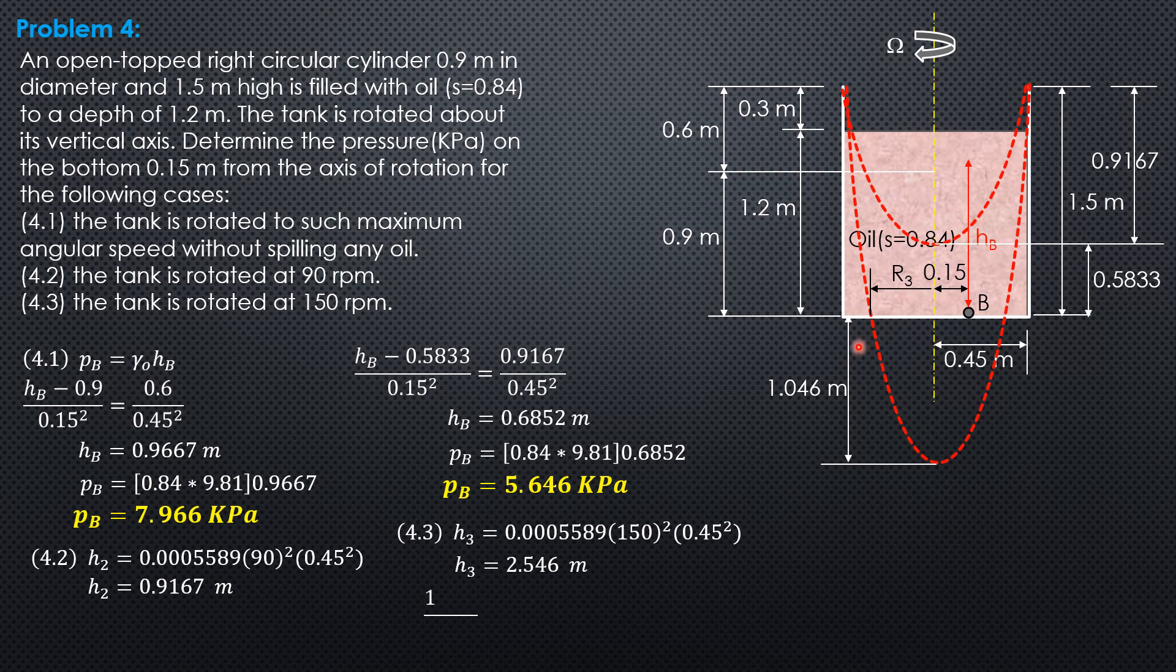To solve for R3 by squared property of parabola, 1.046 over R3 squared equals 2.546 total height over 0.45 squared. So R sub 3 is equal to 0.2884 meter, which is greater than 0.15. That means B will be exposed to the atmosphere and therefore the answer to the third question is pressure at B will be 0.